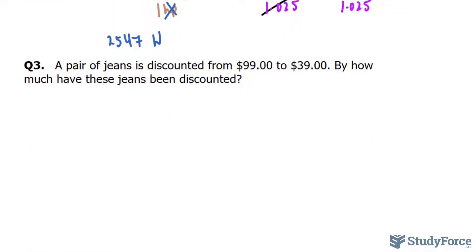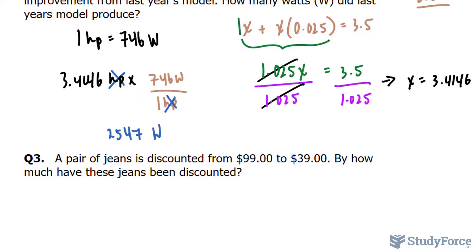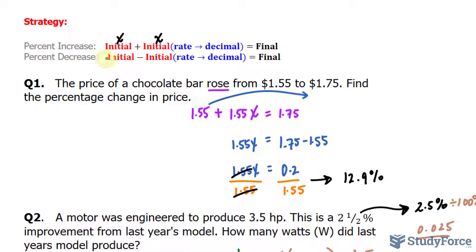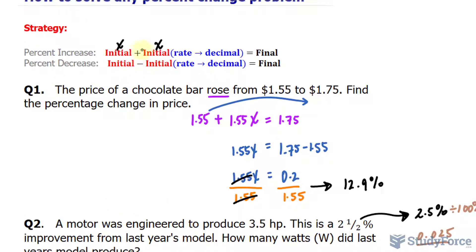And the last question, a pair of jeans is discounted from $99 to $39. By how much have these jeans been discounted? The fact that something has been discounted means that a percentage decrease has occurred. So we'll use the second of the two formulas on our screen. It's basically the same thing, except this one is plus and that one is minus.